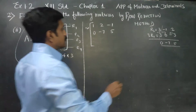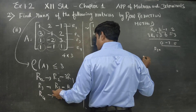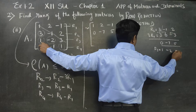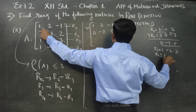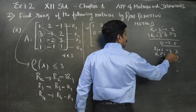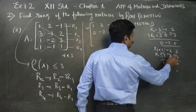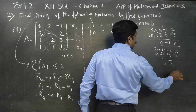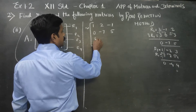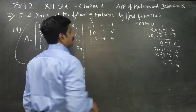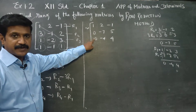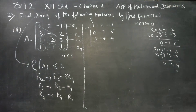R3 minus R1: what is R3? 1, minus 2, 3. R1 is 1, 2, minus 1. Subtraction: that is 0; minus 2 minus 6 is minus 8 — wait, 0; minus 2 minus 2 is minus 4; 3 plus 1 is 4. Then the other line is 0, minus 4, 4. We are going to the sum, closing the sum. Last: R4 minus R1.